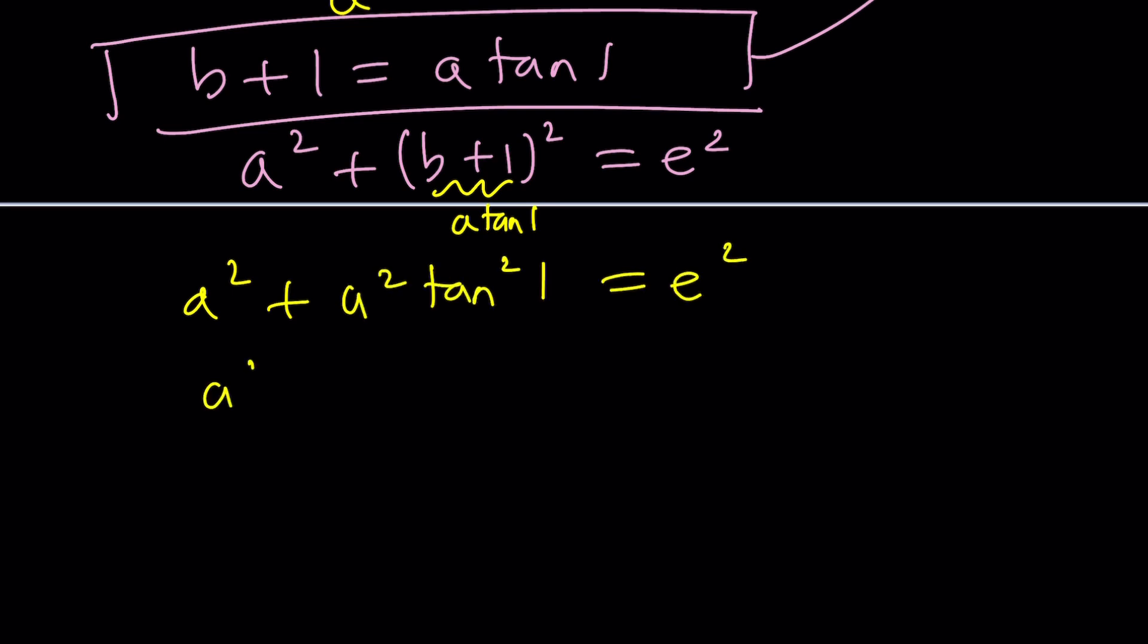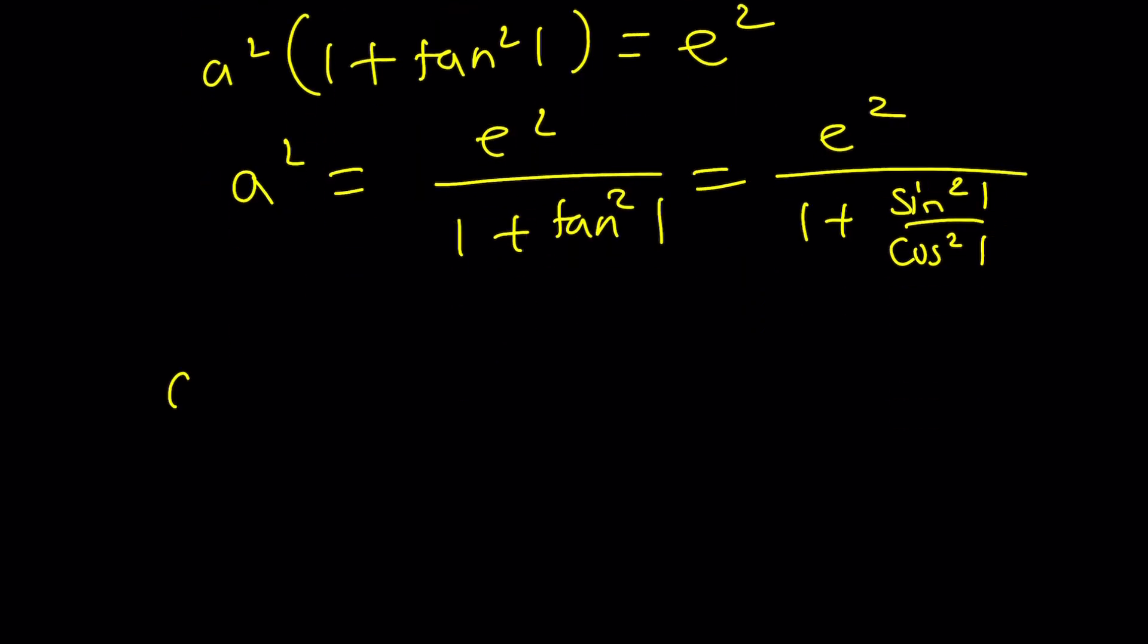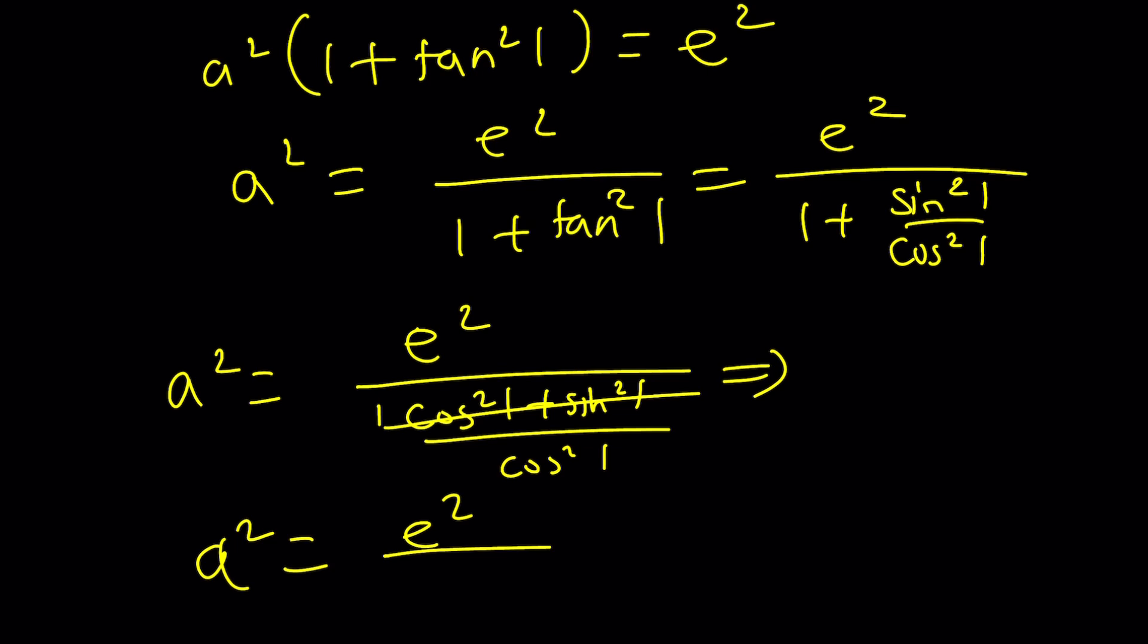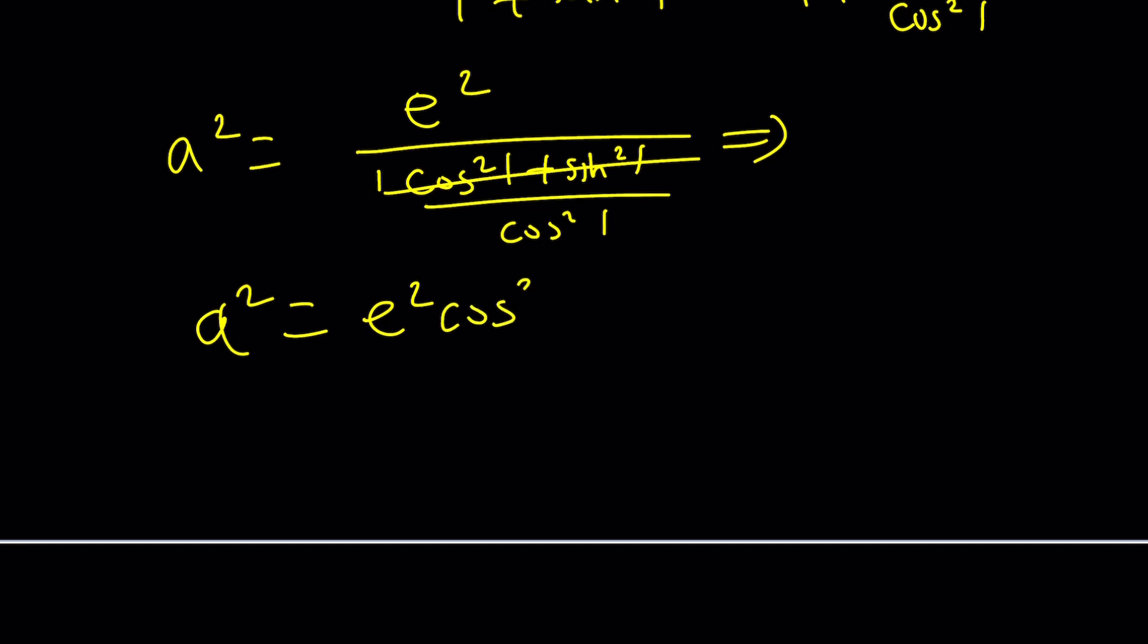Factor out a squared. You're going to get 1 plus tangent squared 1. There's a lot of trigonometric identities. That's also another reason why I call this fun. And then I can kind of divide by that. Tangent squared is sine squared over cosine squared. So I'm going to use that identity and then make a common denominator. E is a constant, by the way. This is going to become cosine squared 1 plus sine squared 1 divided by cosine squared 1. This is 1.